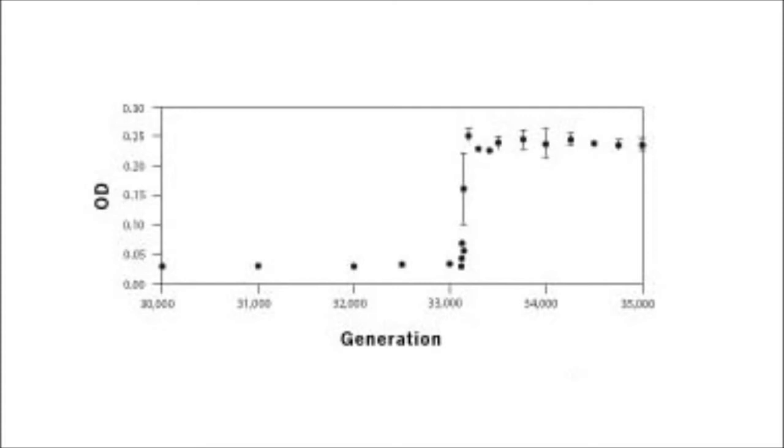Was this sudden improvement in ability to draw nourishment all due to a single dramatic mutation, one so rare that only one of the twelve lineages was fortunate enough to undergo it? Was it, in other words, just another run-of-the-mill mutational step like those in all the tribes?